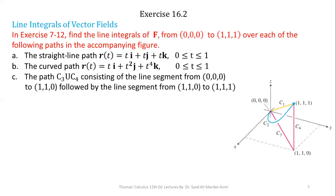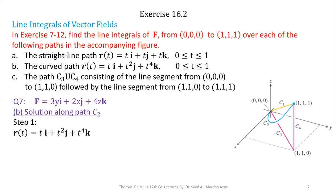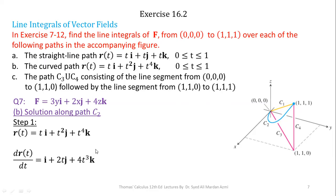Now we calculate the line integral along curve path c2. The procedure is similar. In step one, we calculate dr/dt. The derivative of t is 1, giving i. The derivative of t² is 2t, giving 2t·j. The derivative of t⁴ is 4t³, giving 4t³·k. So dr/dt equals i plus 2t·j plus 4t³·k.